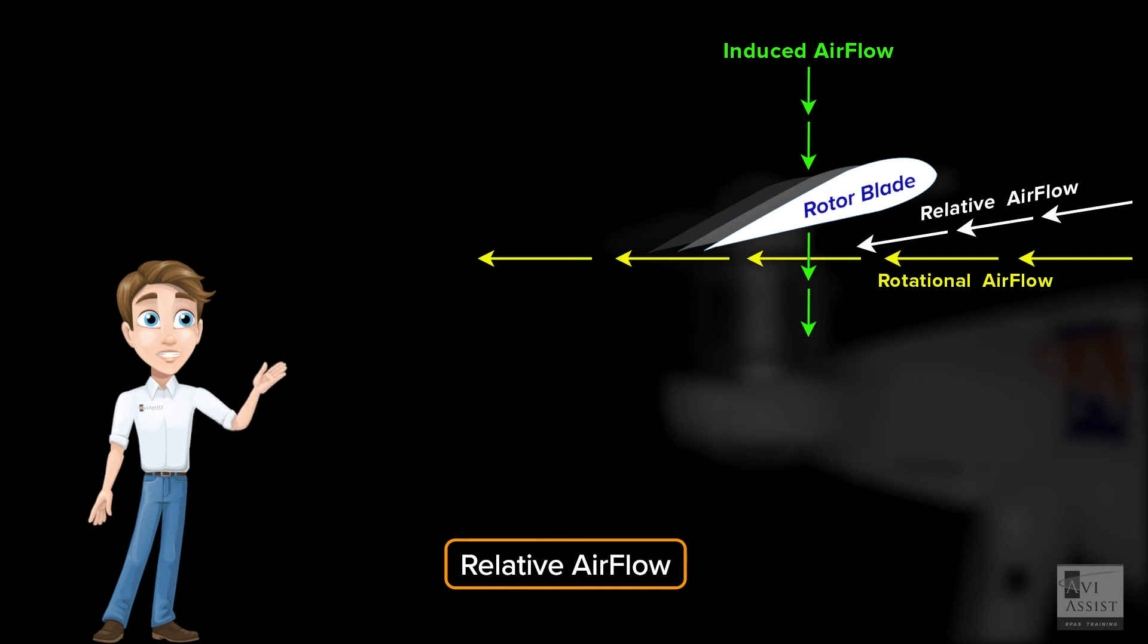The combination of induced airflow and rotational airflow modifies the relative airflow, which in turn affects the angle of attack. I hope this has helped you understand the different components of airflow and how they combine to form relative airflow.